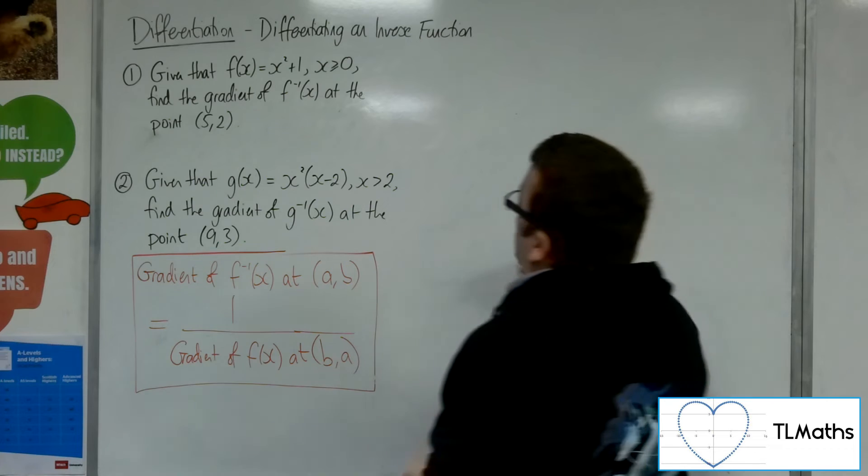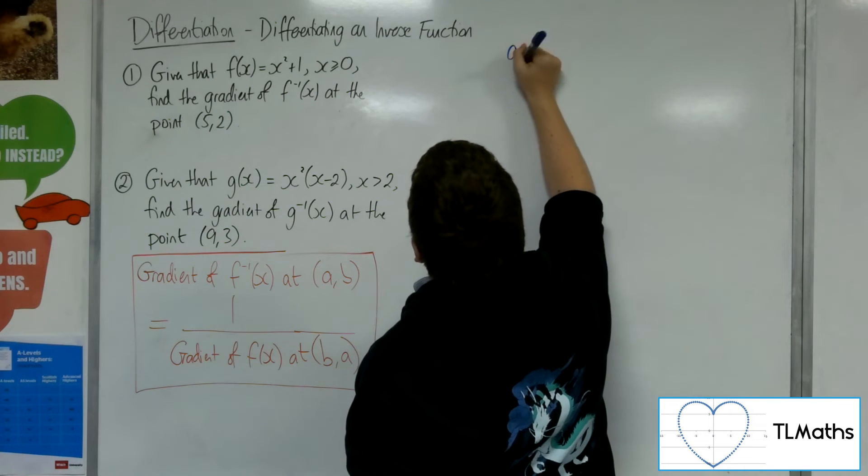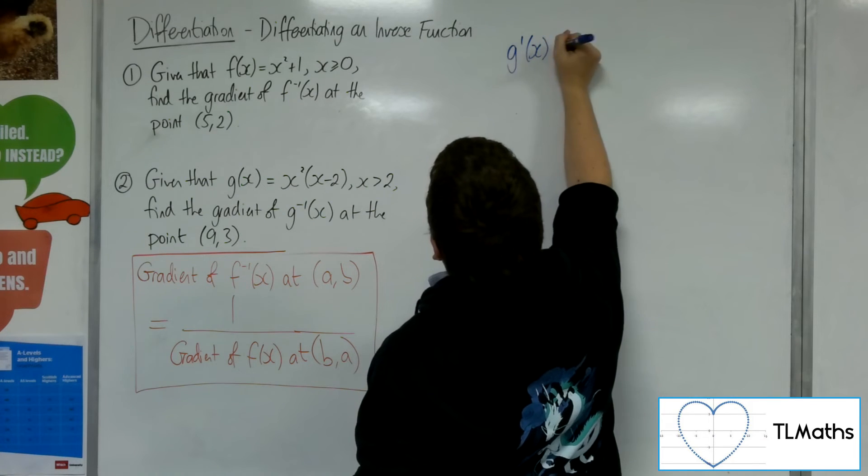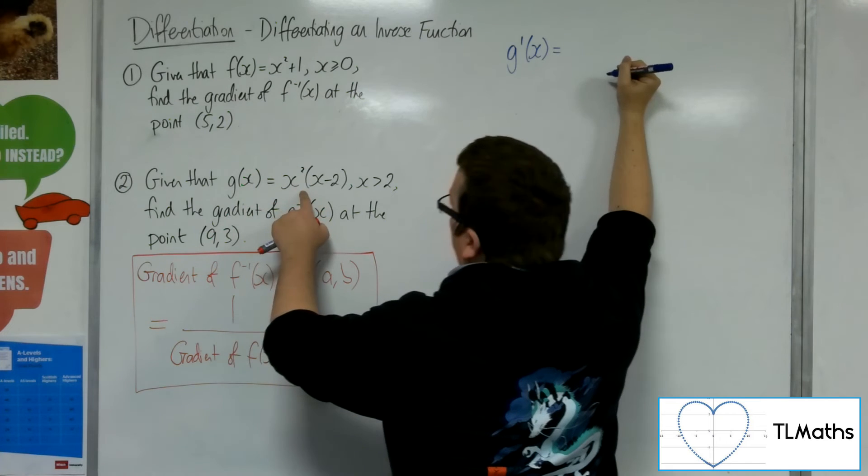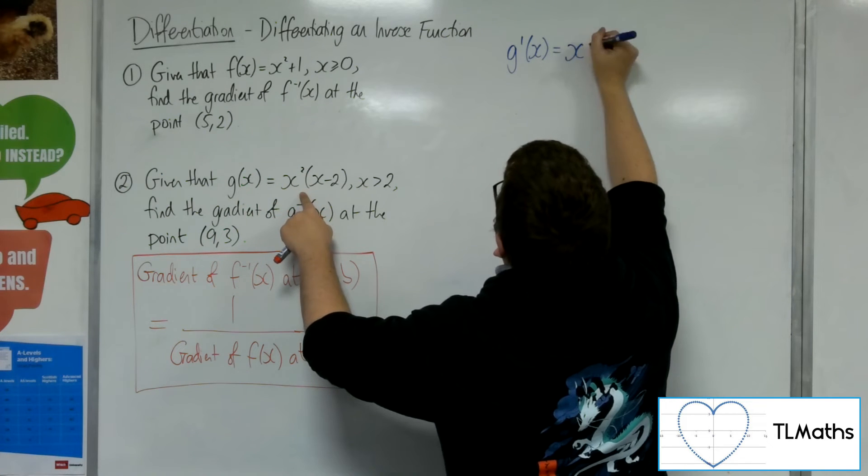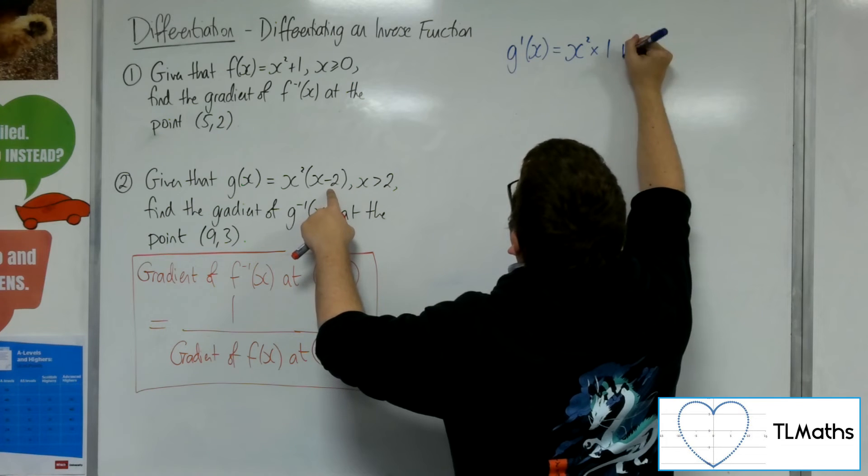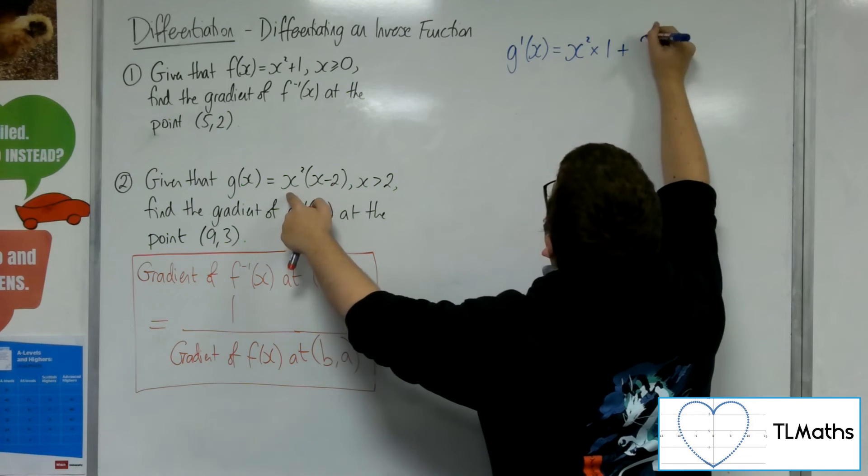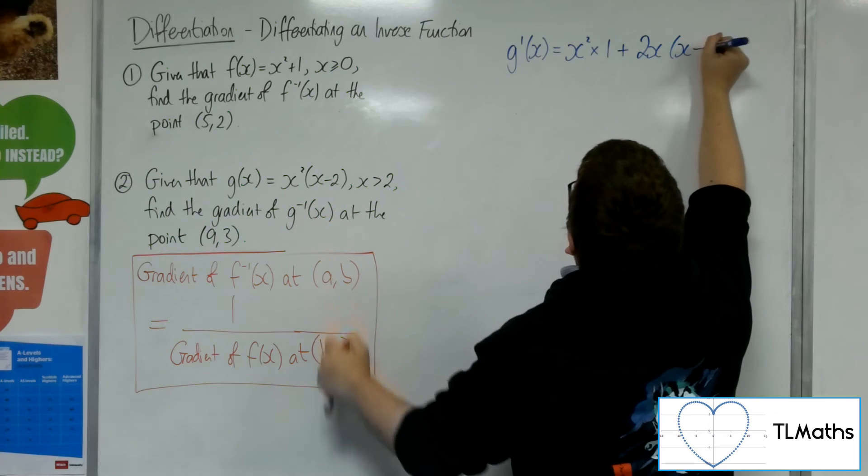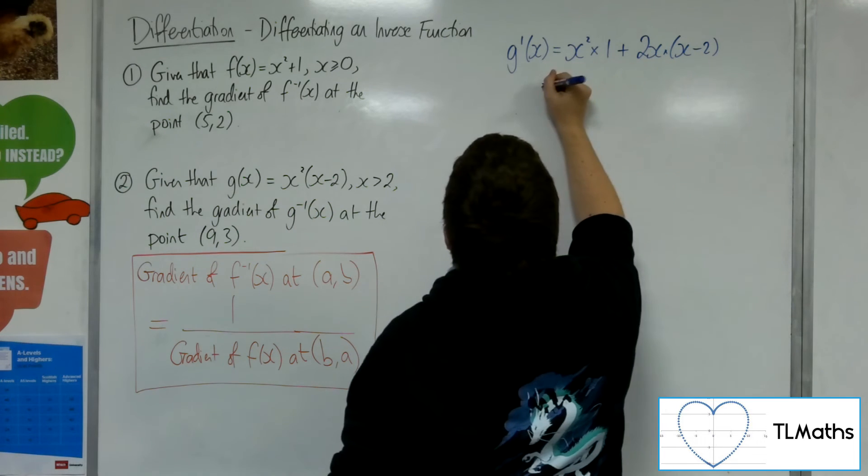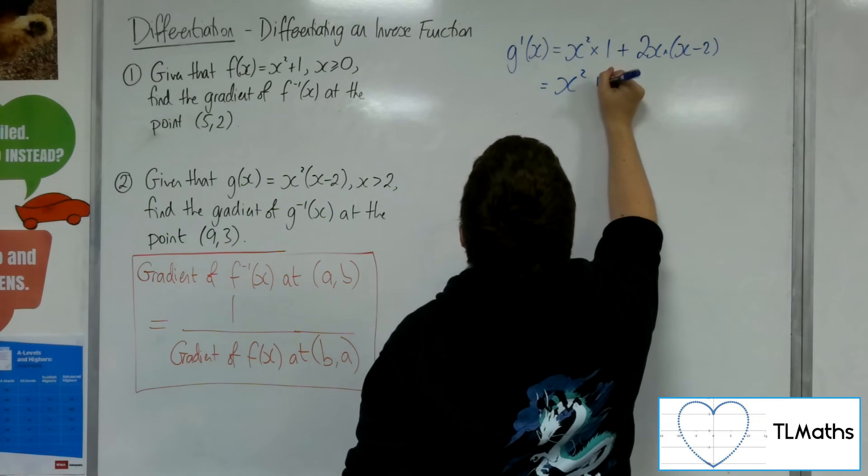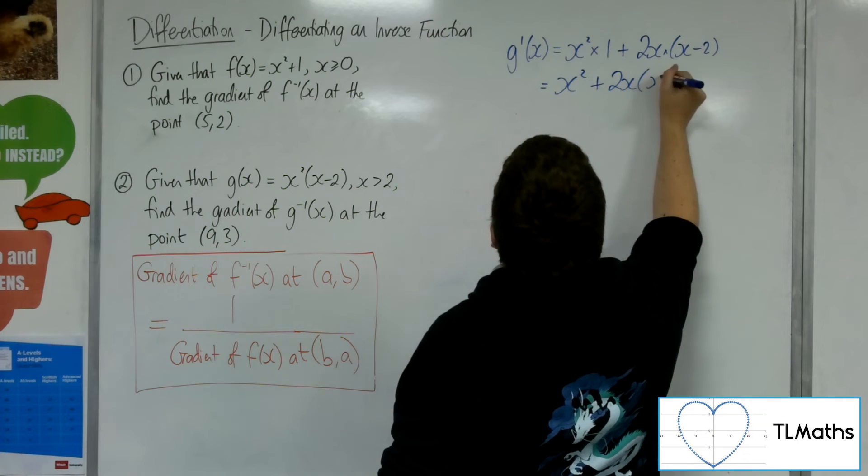So, what I'm going to do is I'm actually going to find g prime of x, the first derivative of this, using the product rule. So, x squared times the derivative of (x minus 2), plus (x minus 2) times the derivative of x squared. So, tidying that up, that's x squared plus 2x lots of (x minus 2).